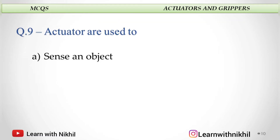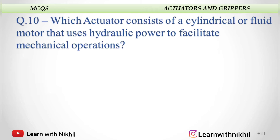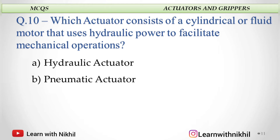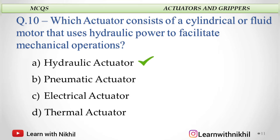Actuators are used to: A. Sense an object, B. Activate a chemical, C. Make a mechanical movement, or D. De-stop the robot? And the answer is make a mechanical movement. Which actuator consists of a cylindrical or fluid motor that uses hydraulic power to facilitate mechanical operations? A. Hydraulic actuator, B. Pneumatic actuator, C. Electrical actuator, or D. Thermal actuator? And the answer is hydraulic actuator.